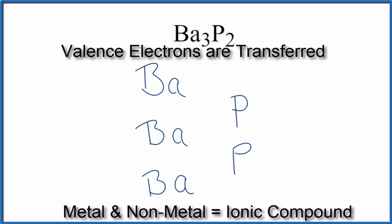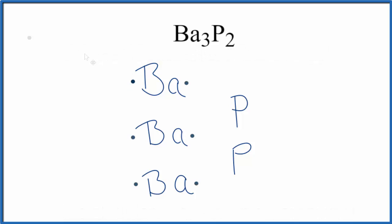Barium's in group 2. It has two valence electrons. That's for each barium. And then phosphorus, that's in group 15, sometimes called 5A. It has five valence electrons.